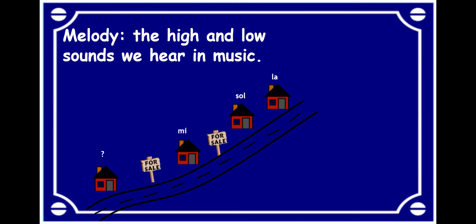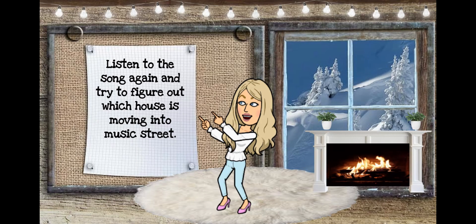All right, now we're going to take a look at the melody for our song, Mouse Mousy. Remember, melody is the high and low sounds we hear in music. Often, we use Music Street to help us. We know our house is me, so, and la, and a new house is going to join us in our song, Mouse Mousy. Let's try to figure out what that house might be. So, listen to the song again, and try to figure out which house is moving in.